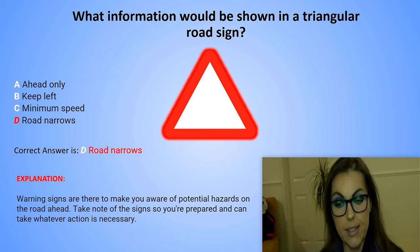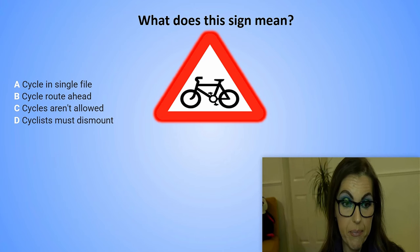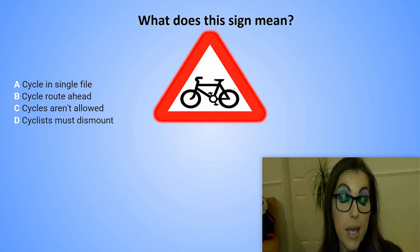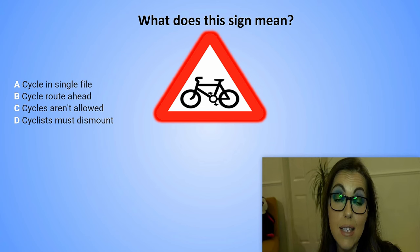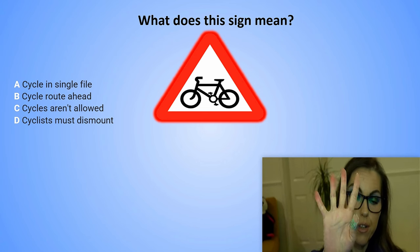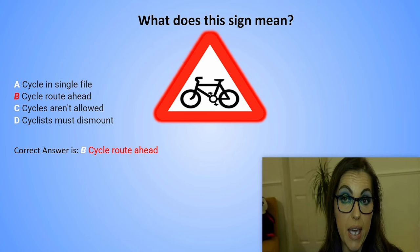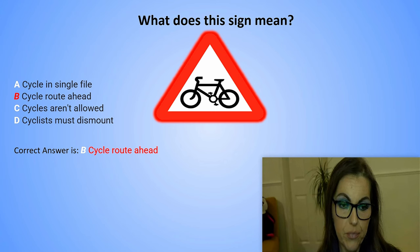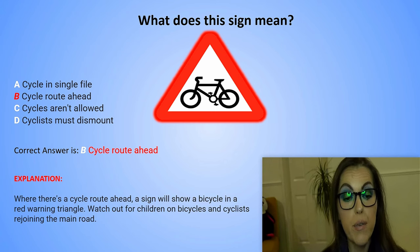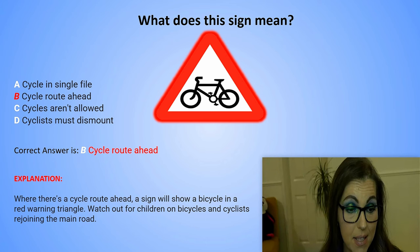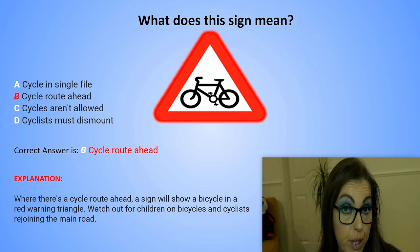What does this sign mean? A. Cycle in a single file. B. Cycle route ahead. C. Cycles aren't allowed. Or D. Cyclists must dismount. The correct answer is B. Cycle route ahead. Explanation: Where there is a cycle route ahead, a sign will show a bicycle in a red warning triangle. Watch out for children on bicycles and cyclists rejoining the main road.